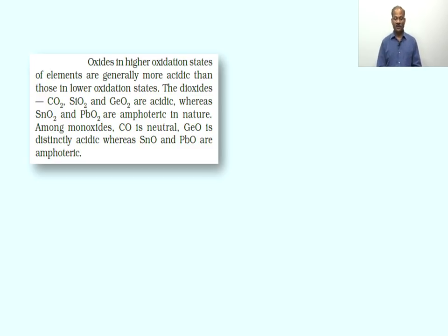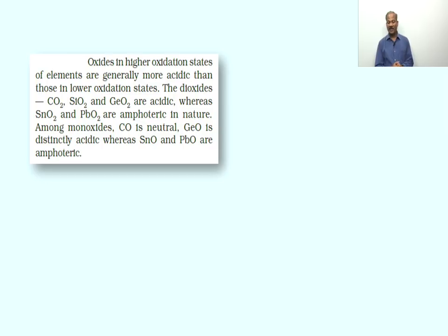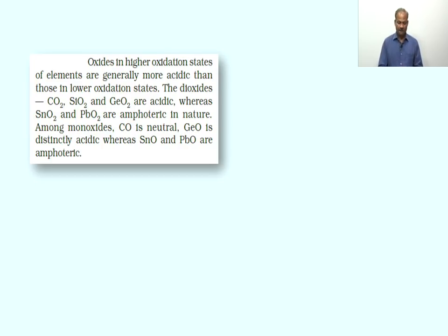Oxides in higher oxidation states of Group 14 elements are generally more acidic than those in lower oxidation states. The oxides of carbon, silicon, and germanium are acidic, whereas oxides of tin and lead are amphoteric in nature. So tin and lead produce amphoteric oxides, while carbon, silicon, and germanium produce acidic oxides — no basic oxides appear here. In the +2 oxidation state: carbon's oxide is neutral, germanium's oxide is acidic, tin and lead's oxides are amphoteric, and silicon's mono-oxide is unstable and does not exist.